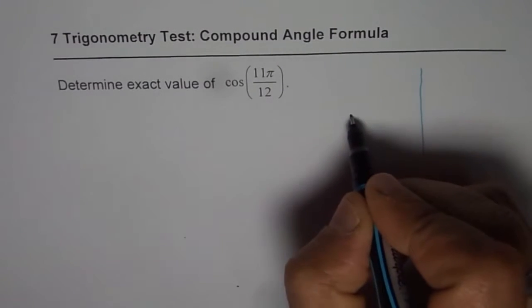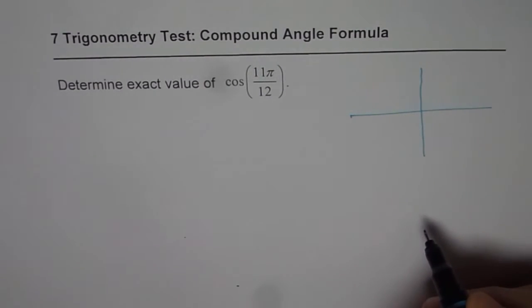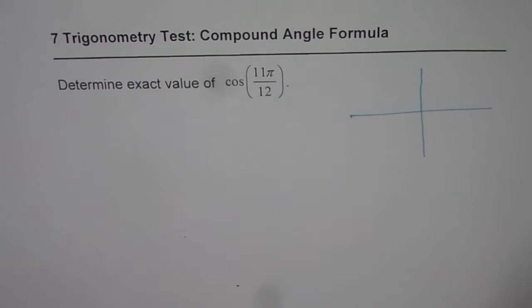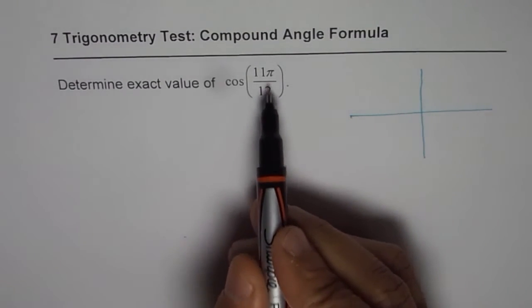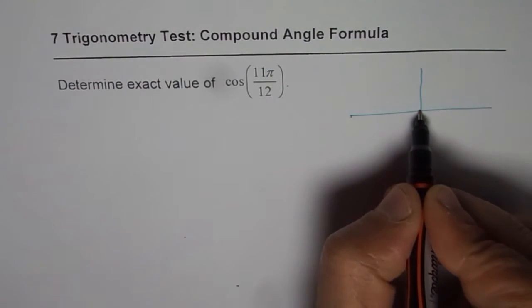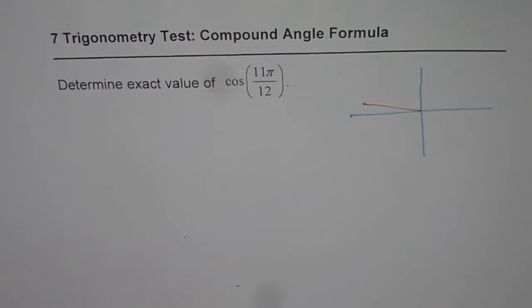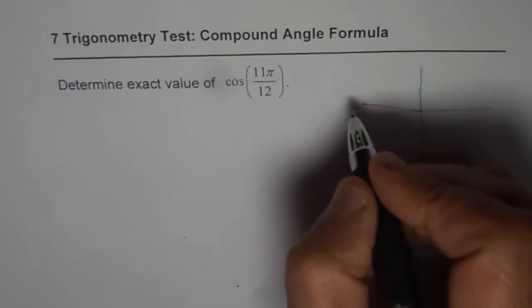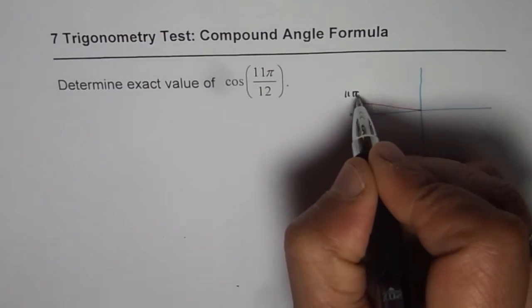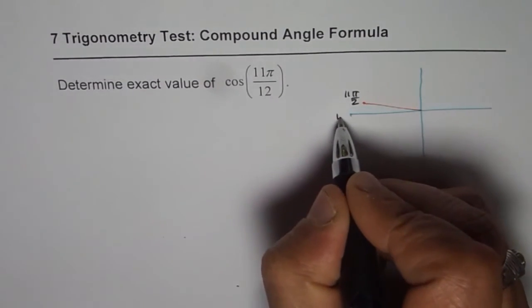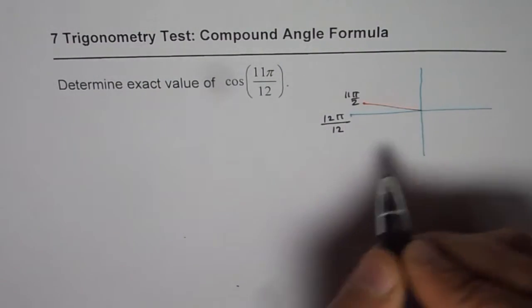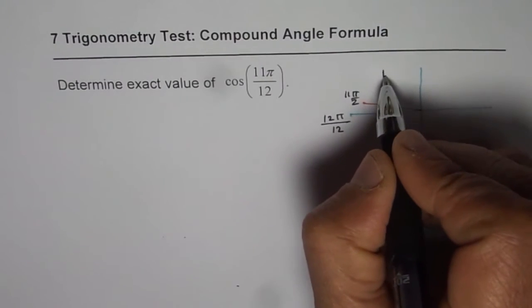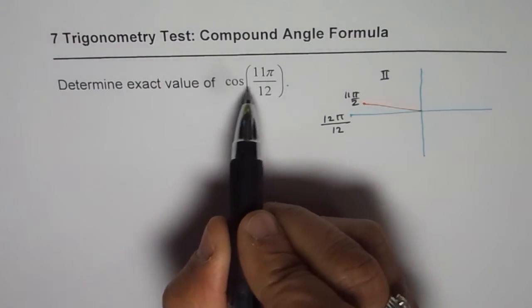Well this question takes us back to the first chapter of unit 7 where we are working with equivalent trigonometric ratios. Now when we say cos of 11 pi by 12 it really means that the terminal arm is somewhere here. So that will be 11 pi by 12. So we can think about the pi divided into 12 equal parts that means 12 pi over 12. So 11 pi will be right there. So we are in quadrant 2.